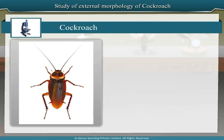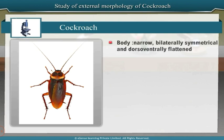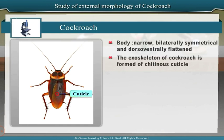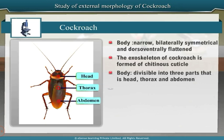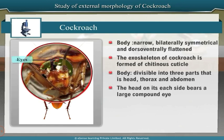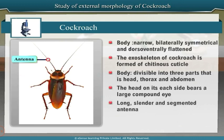The body of cockroach is narrow, bilaterally symmetrical and dorso-ventrally flattened. The exoskeleton of cockroach is formed of chitinous cuticle. The body is divisible into three parts: head, thorax and abdomen. The head on each side bears a large compound eye, a long slender segmented antenna, and different mouth parts performing specified functions.